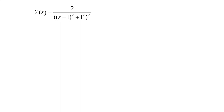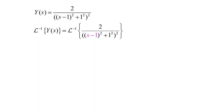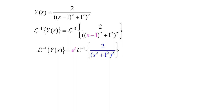Now that we have Y(s) by itself, we'll take the inverse Laplace transform of both sides to find our solution. The inverse Laplace transform of Y(s) equals the inverse Laplace transform of two over ((s minus one) squared plus one) squared. Since we see s minus one within the expression, that tells us we want to use translation. We think of s being translated to s minus one, and by the first translation theorem that gives us an exponential in t. So the inverse Laplace transform of Y(s) equals e to the t times the inverse Laplace transform of two over (s squared plus one) squared.